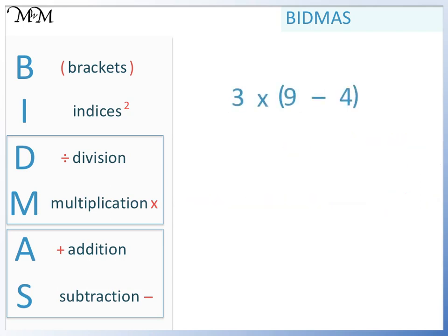Here's another example. Using BIDMAS, we begin by checking B. And we do have brackets in this calculation. So we work this part out first. 9 take away 4 equals 5. 3 times 5 equals 15.